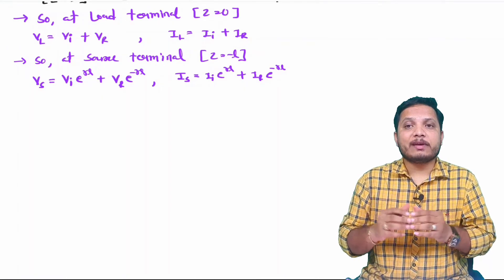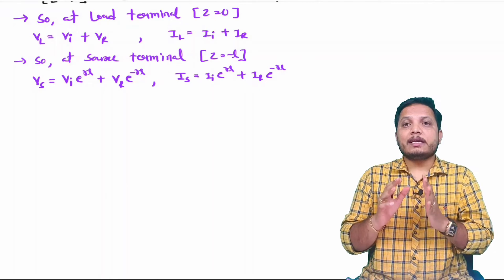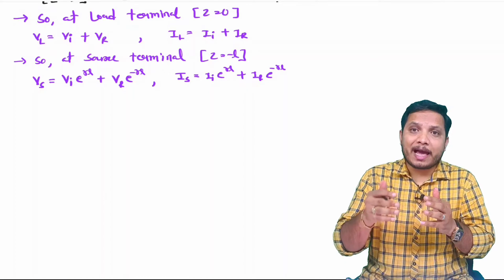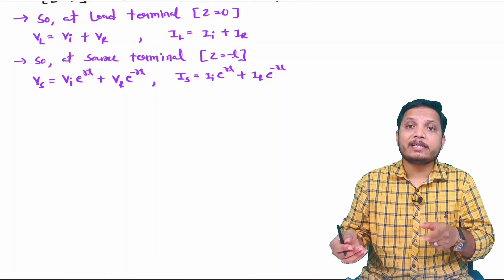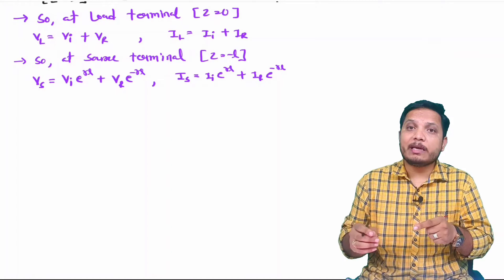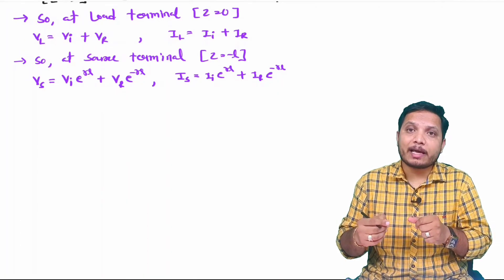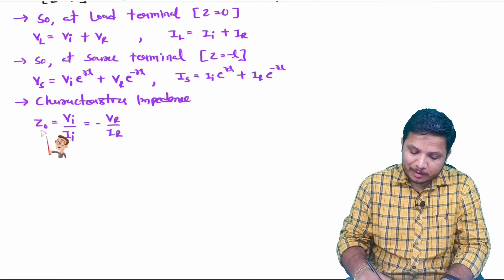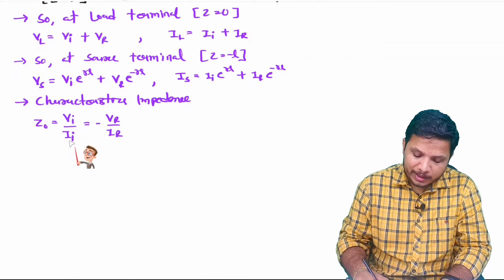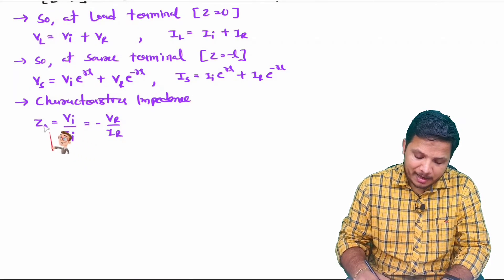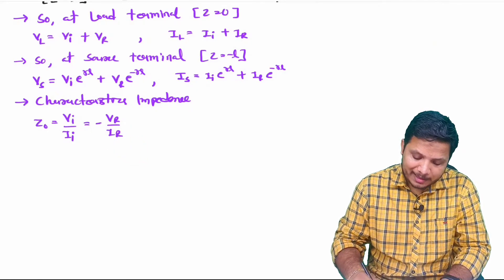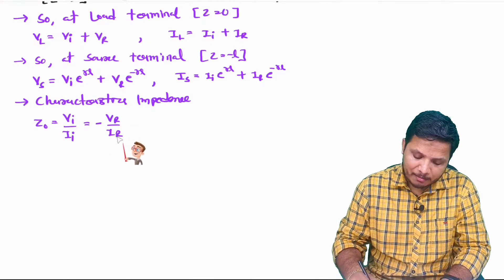There are a few basic sign conventions one should know. The characteristic impedance Z0 equals Vi divided by Ii. But in terms of reflected voltage and reflected current, it is minus Vr divided by Ir. Do not forget this minus sign — it is minus of Vr by Ir.